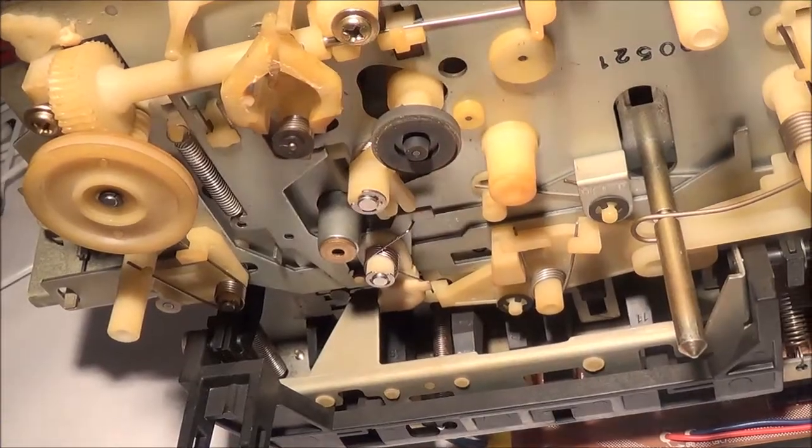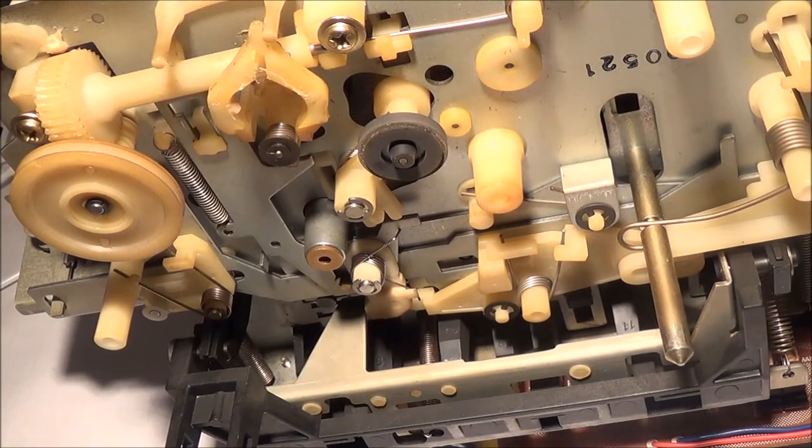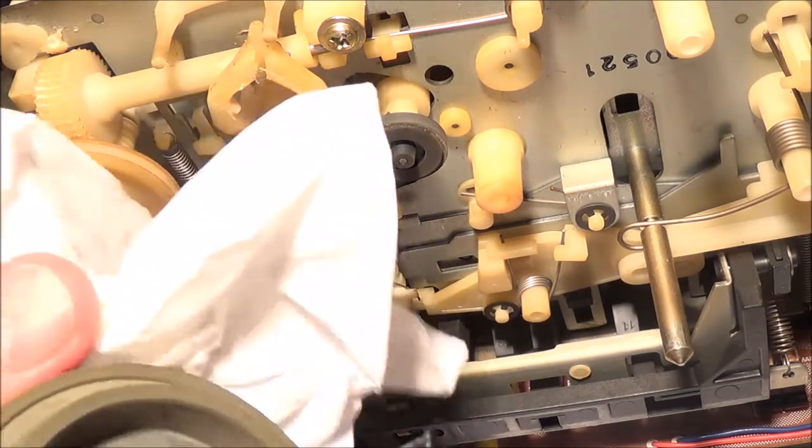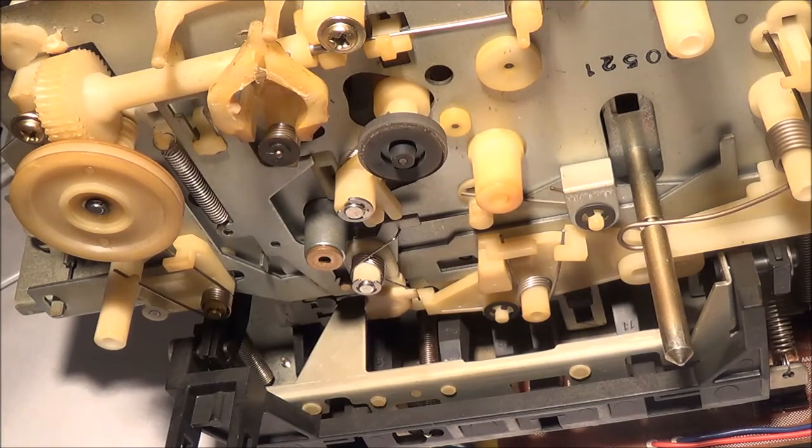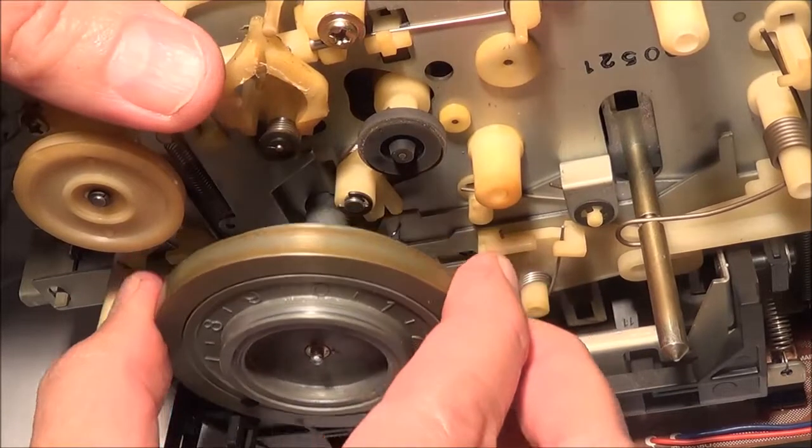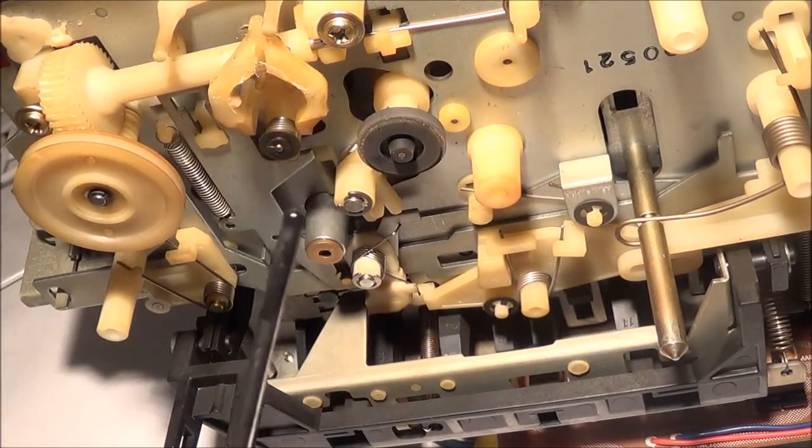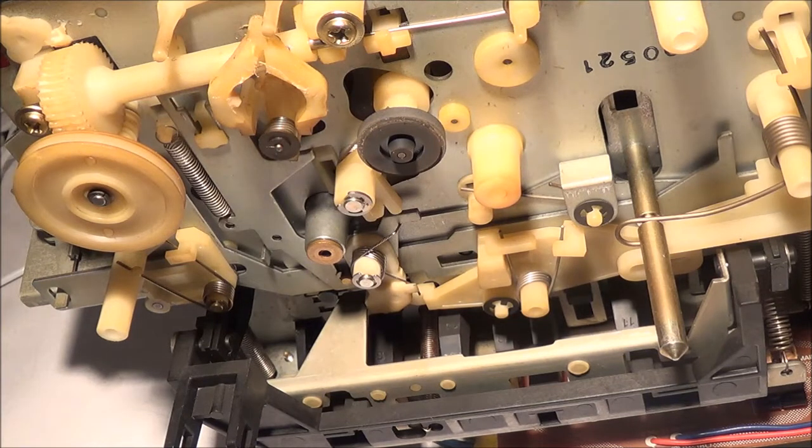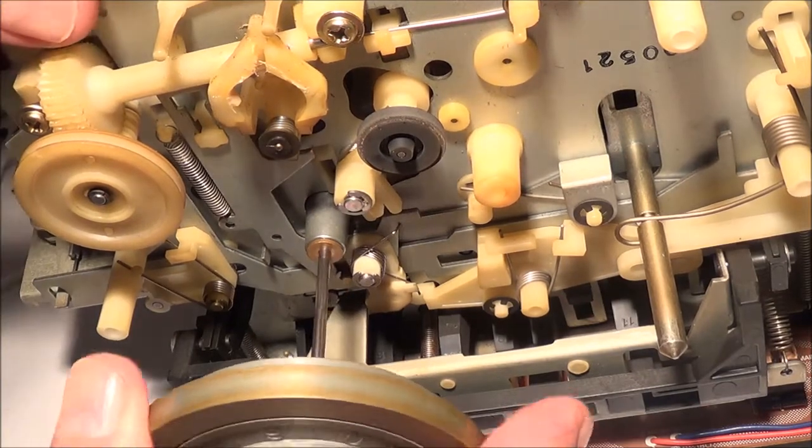So I got the other side all cleaned up and now what I'm going to do is put the flywheel back in. When I pull it out it's still got gunk on it, so I'm just going to continuously clean it with alcohol until it becomes clean when I pull it out. So I just do that over and over again until it's all cleaned up.